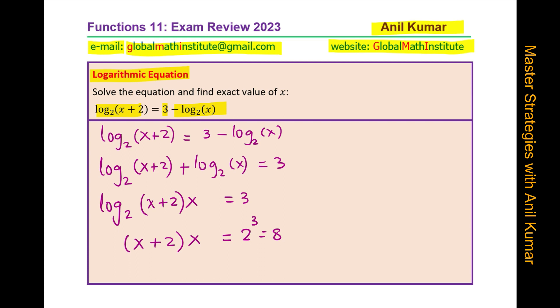Now I think it is simple. Just expand, simplify. We get x squared plus 2x. Bringing 8 to the left side, we get a quadratic equation. And this quadratic equation can be solved easily. You can now pause the video, answer and then check with my solution.